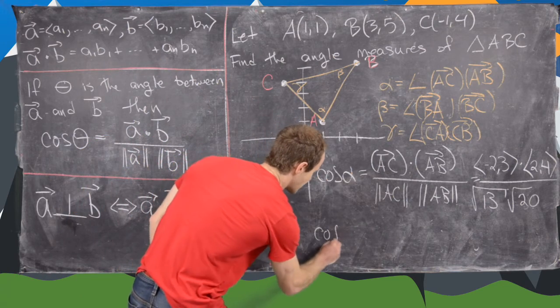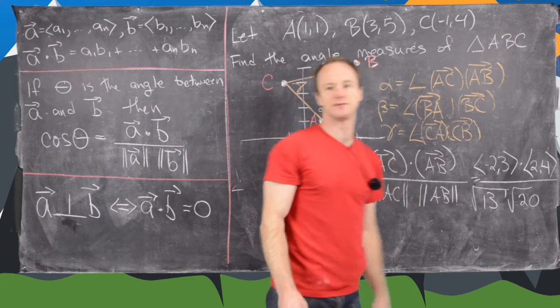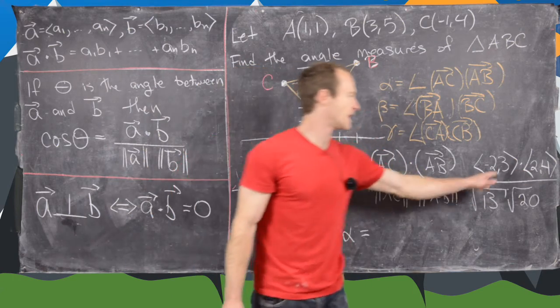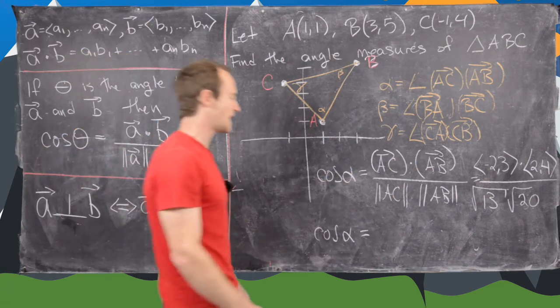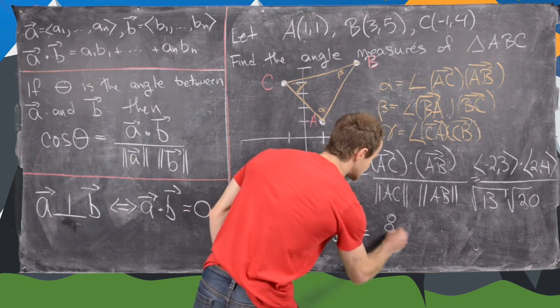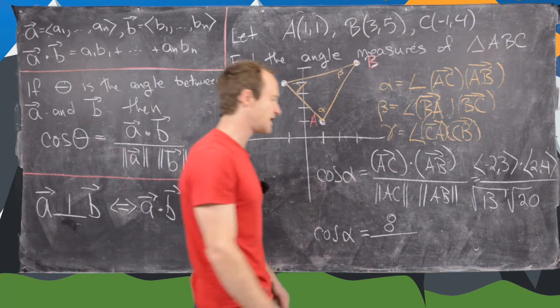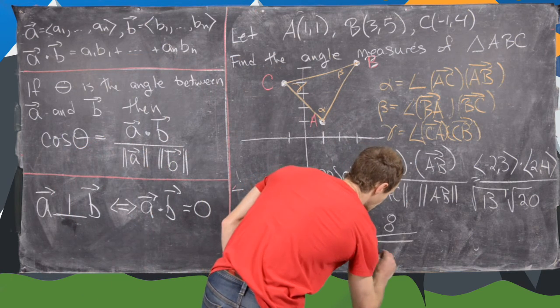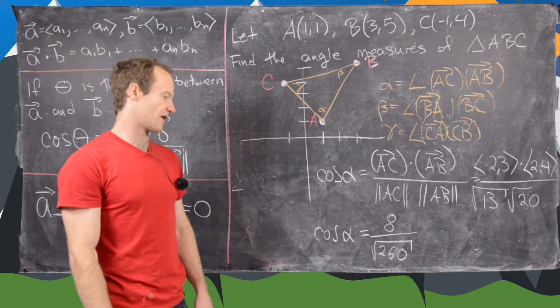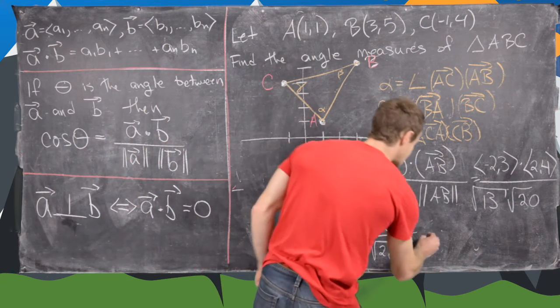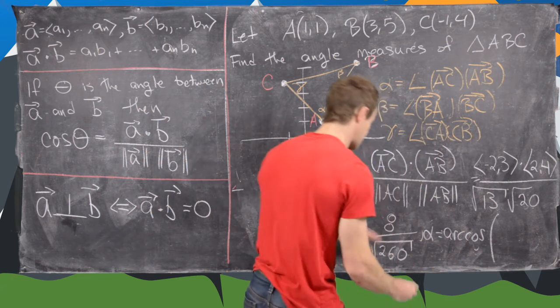But that is going to leave us with the cosine of alpha equals, so we can take this dot product. We have negative 2 times 2, which is negative 4, and 3 times 4, which is 12. So we have 12 minus 4. So we have 8 over the square root of 13 times the square root of 20. So that's going to be the square root of 260. So that's the cosine of our angle, but that tells us that alpha equals the inverse cosine of this quantity.